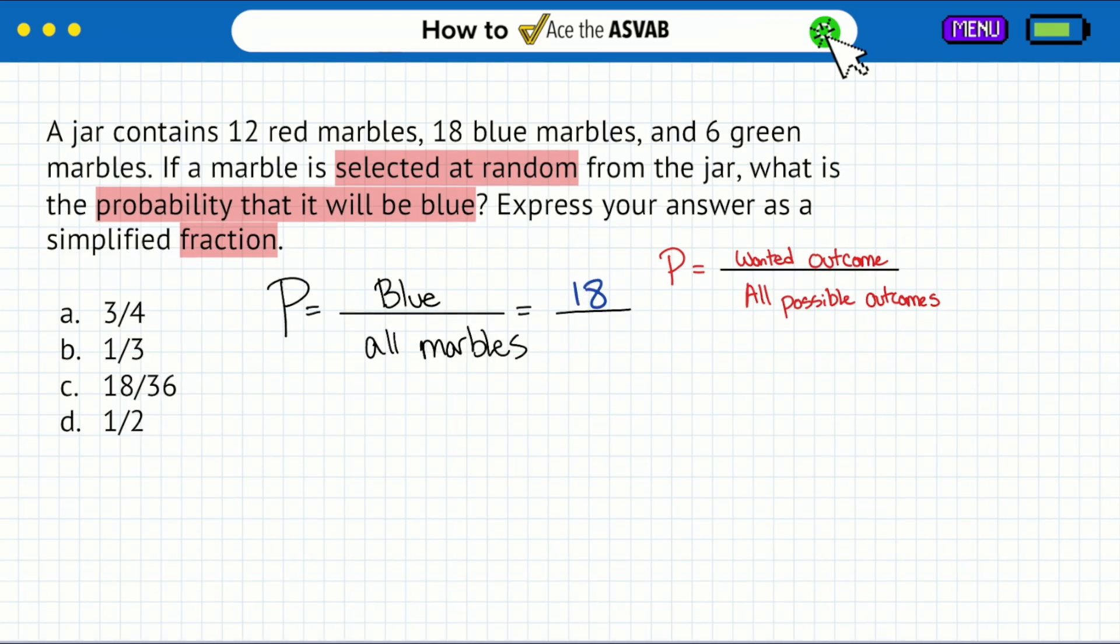And then all marbles. The word 'all' means literally all. All of the marbles is what we're counting. So we have 12 red, 18 blue, and 6 green. If we add all of that together, we have 12 red, then we have 18 blue, and then we have 6 green. We'll just add all that up and we get a total of 36 marbles. So it's 18 over a total of 36.